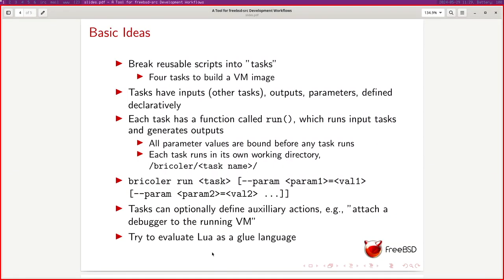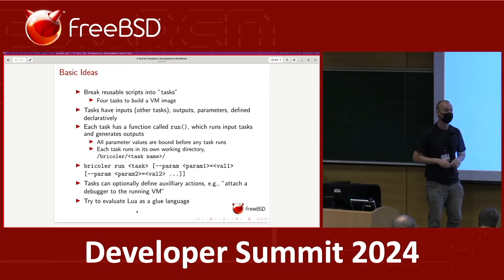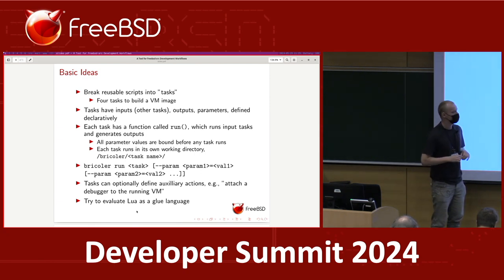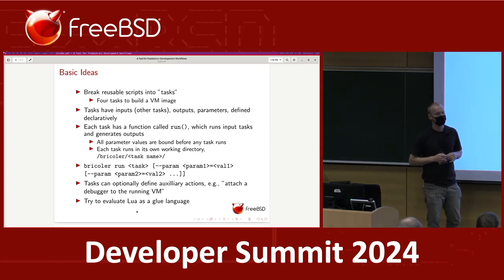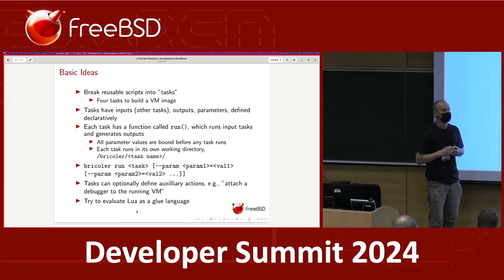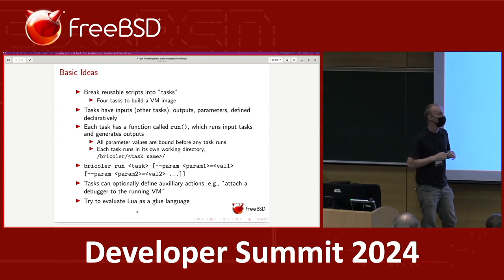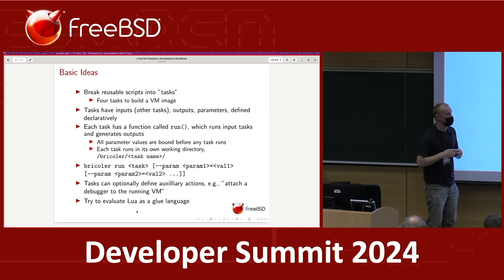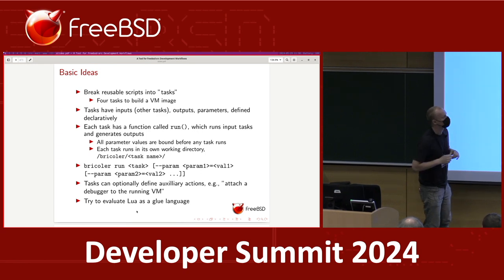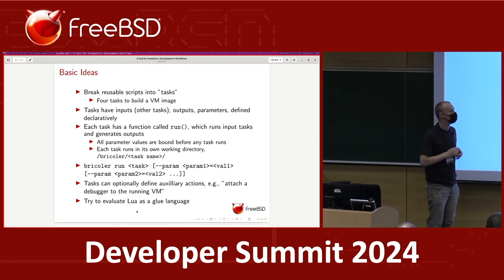One of the other things I wanted to do with this project is evaluate the use of Lua as a glue language in the base system instead of shell. We have Flua in the base system — it's used for a few small things, but its adoption is held back by the fact that we have no real system libraries for it. If you want to do things like spawn a command, a lot of system call wrappers are missing, a lot of libc function call wrappers are missing. It's not a lot of work to add them, but there needs to be discussion about how to namespace things, what modules to provide, and how to document them.